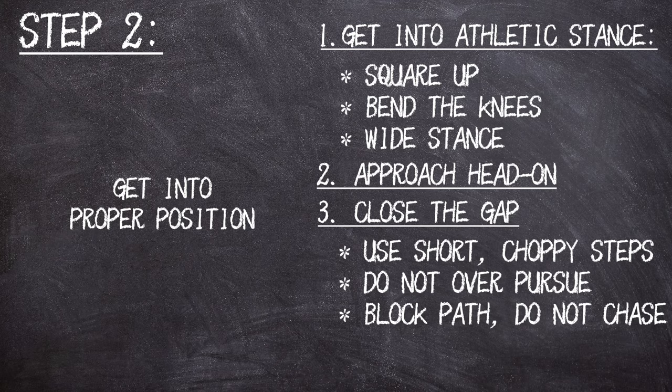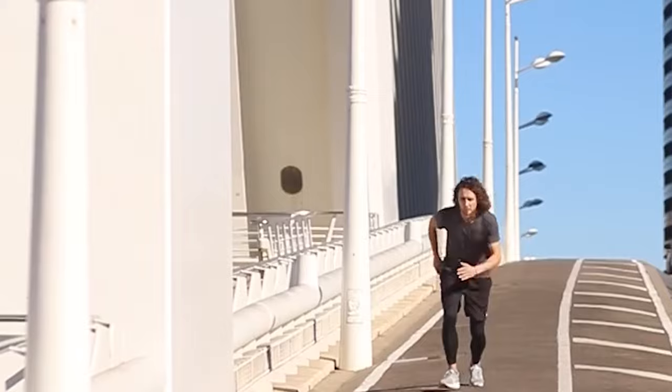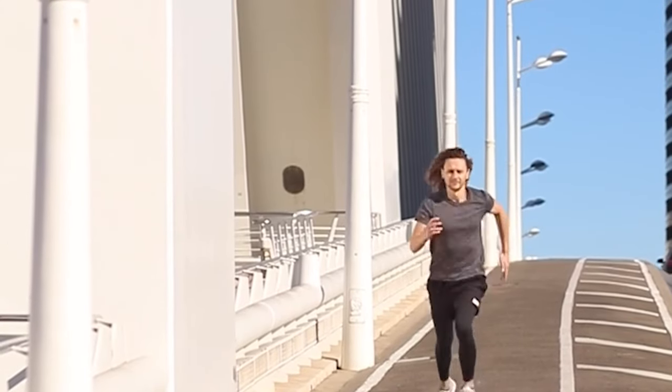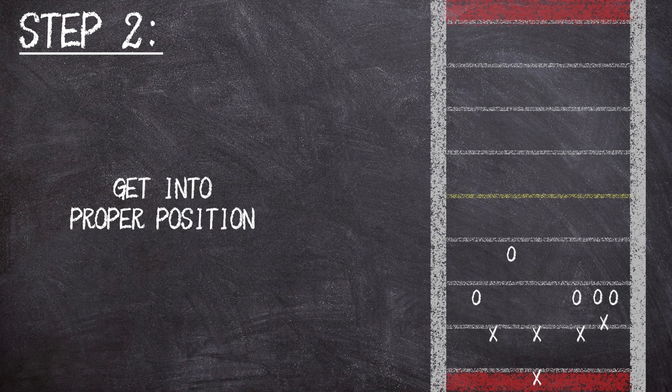Avoid getting behind and chasing if possible. That doesn't mean give up on the play. If you do end up behind, do whatever you can to get to the runner. The ball carrier will now have to find a way around the defender. This means the ball carrier will likely have to slow down, at least a little.